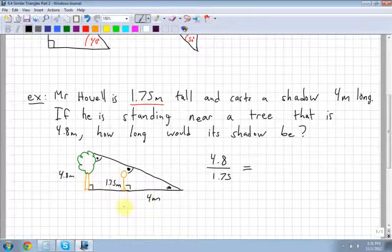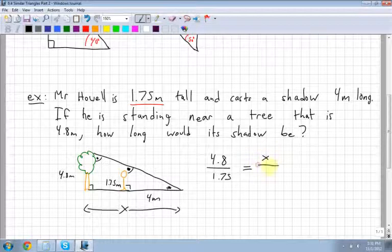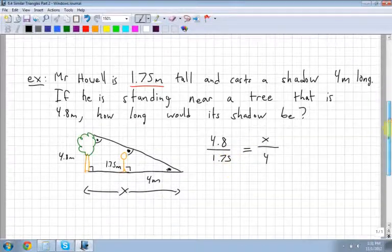Now I look at the shadow. Well, the shadow length for the tree I don't know. So I'm going to call that x. That's the distance all the way across. So that's x over the shadow length of me, which is 4. So now I have a ratio set up that I can solve.